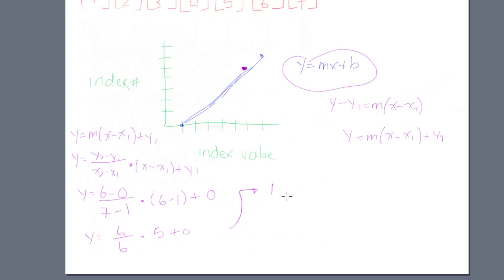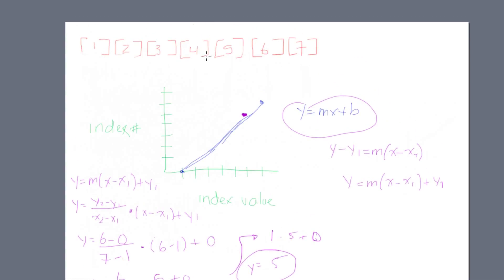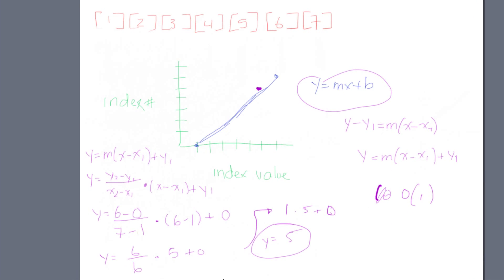So we get: y = (6/6) * 5 + 0, which gives us 1 * 5 + 0 = 5. And voilà — y equals 5, which is our index number. At index 5, the value is 6. With just one formula application we got the index. Since we started from the right position and it was exactly the value we wanted, it becomes the best case scenario: O(1).